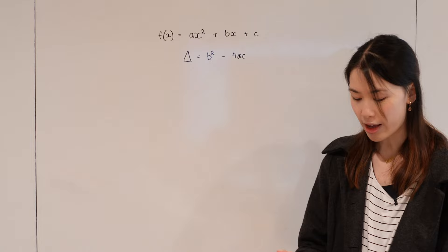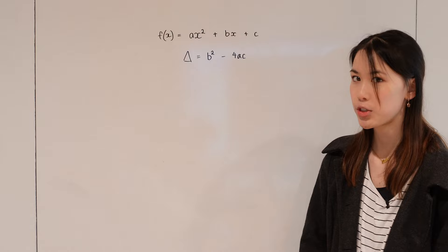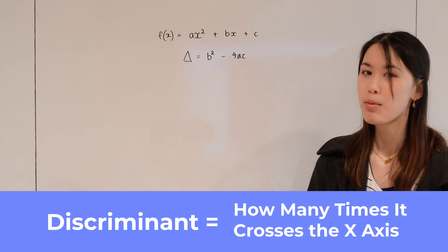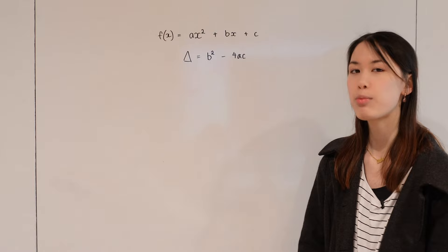The value of the discriminant implies the number of solutions where the function is equal to zero. In other words, the discriminant tells us how many times the function will cross the x-axis. There are three possible ways in which this occurs.